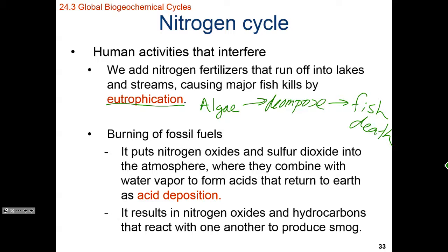The burning of fossil fuels has been changing the nitrogen balance by adding nitrogen oxides to the atmosphere. Another gas associated with burning fossil fuels is sulfur dioxide. When we add these two gases to the atmosphere, they combine with water to form nitric acid and sulfuric acid — two primary components of acid rain. It's worth emphasizing that all rain is acidic because of carbonic acid from CO2 in the atmosphere. However, nitrogen oxides and sulfur dioxide make rain even more acidic than it naturally is — this is what we refer to as acid rain.